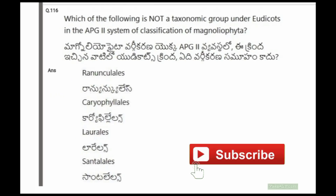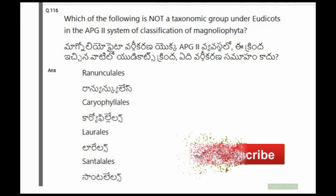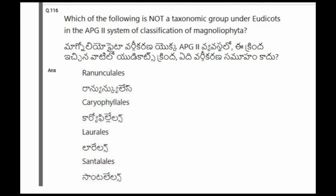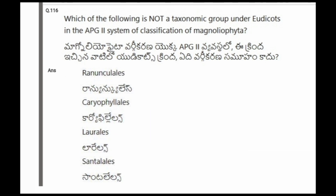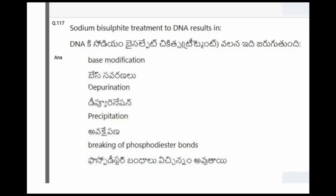Next question: Which of the following is not a taxonomic group under Eudicots in the APG system 2 of classification of Magnoliophyta? The options are Ranunculales, Caryophyllales, Laurales, Santalales. The correct option is Laurales.